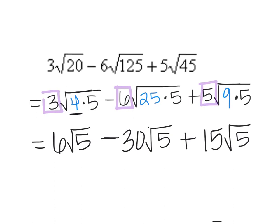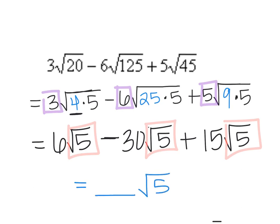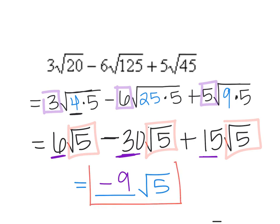Everything that has to do with the square root doesn't change, so part of my answer is automatically going to be some number times the square root of 5. We add and subtract left to right the numbers on the outside: 6 minus 30 plus 15. I end up with negative 9. That right there is my final answer: negative 9 square root 5.